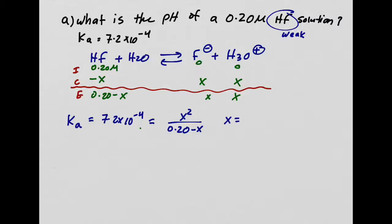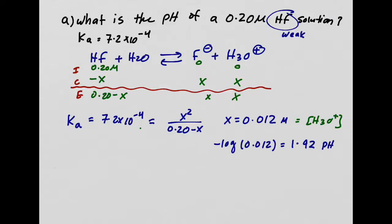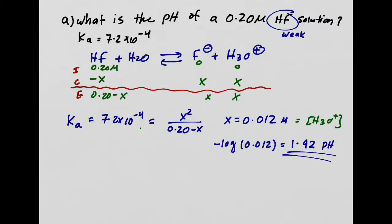Solving for x gives 0.012 M, which is the hydronium concentration. pH = −log[H₃O⁺] = −log(0.012) = 1.92. Note the two significant figures — with a log, the sig figs come after the decimal place.